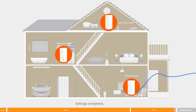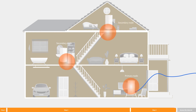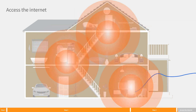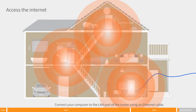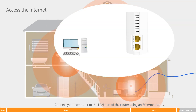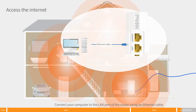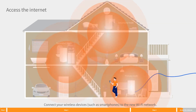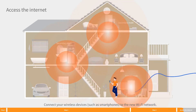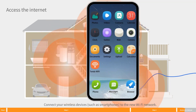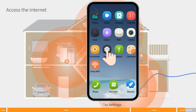Settings completed. To access the internet, connect your computer to the LAN port of the router using an ethernet cable. Connect your wireless devices, such as smartphones, to the new WiFi network.